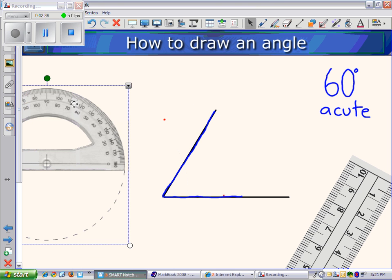And we can remove the protractor now. And just note that here's the angle, and it is 60 degrees.